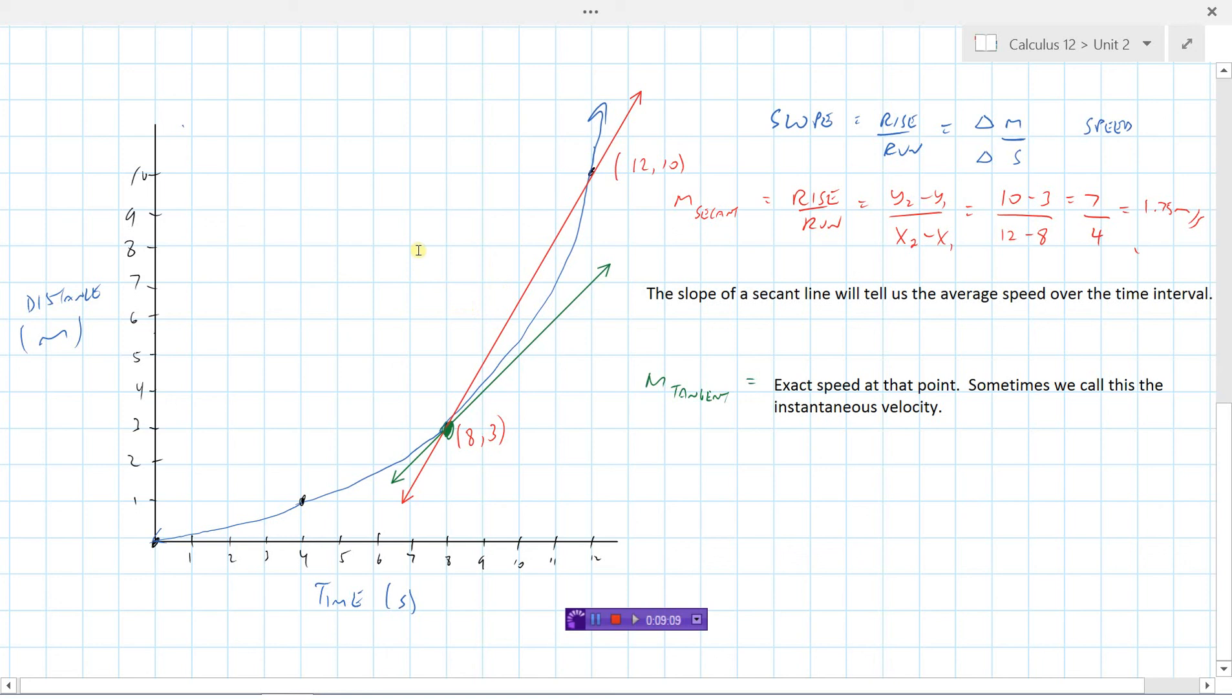So secant line, a line that goes through two points on the curve. Tangent line, a line that just nicks or just barely touches the curve at one point. If we're dealing with a distance time curve, the secant line slope would represent the average speed over the time interval, whereas the slope of the tangent line would represent the exact speed at that one point that we were tangent to the curve at. So those are secant lines and tangent lines.